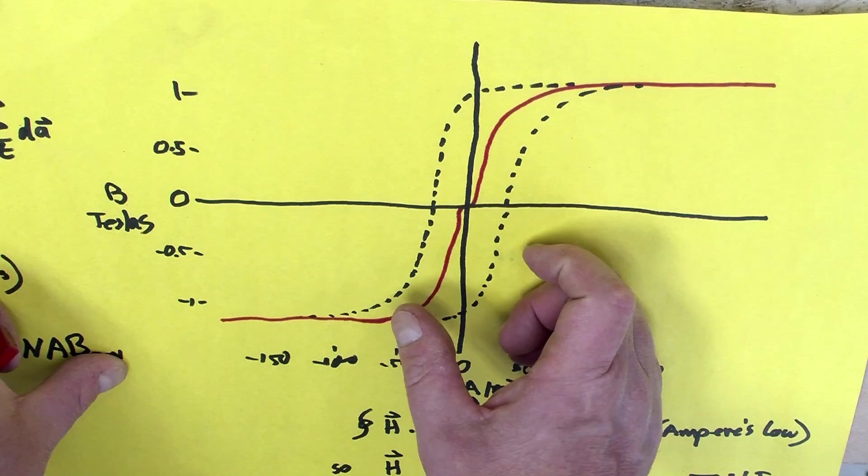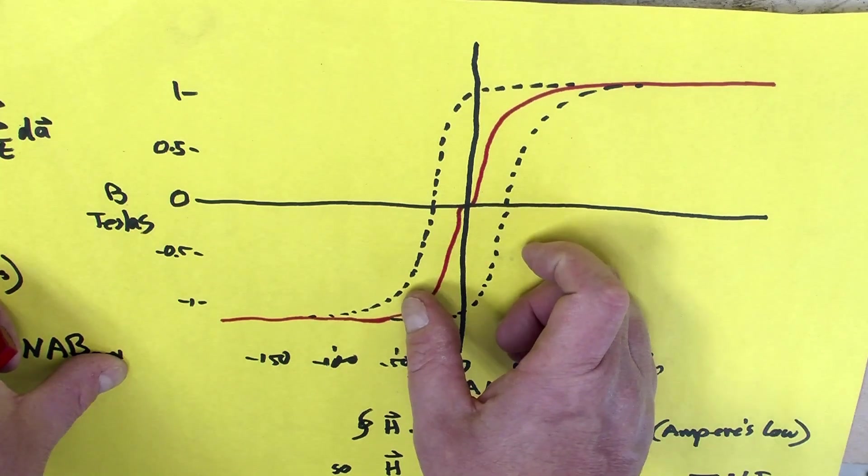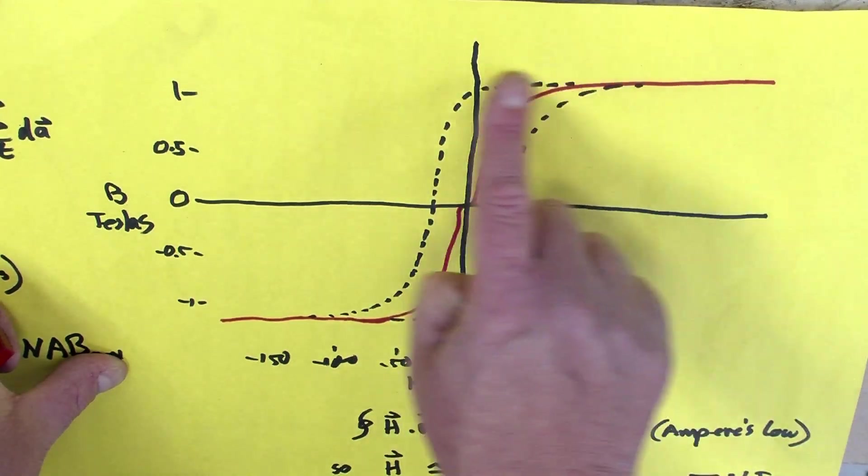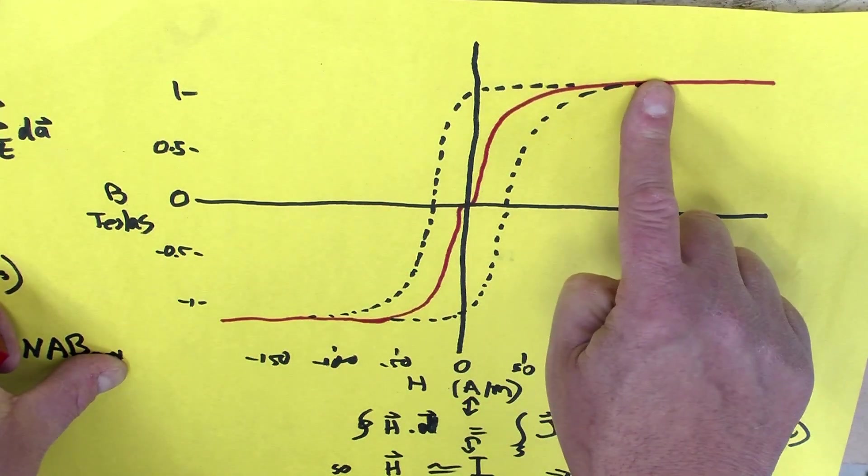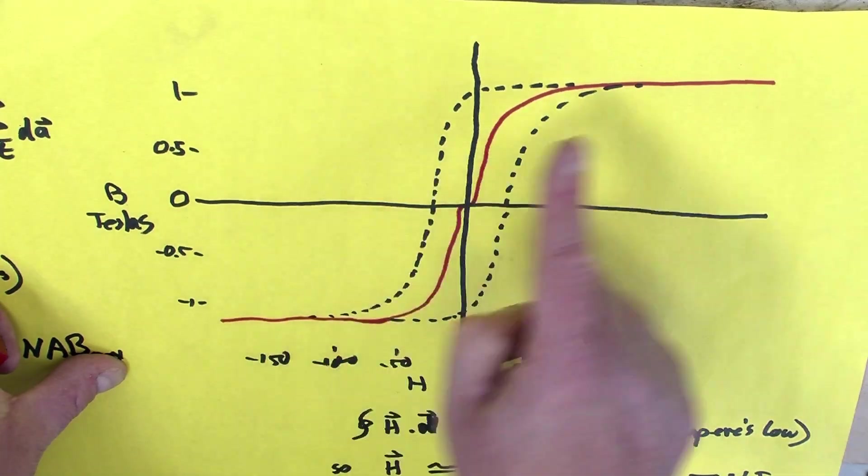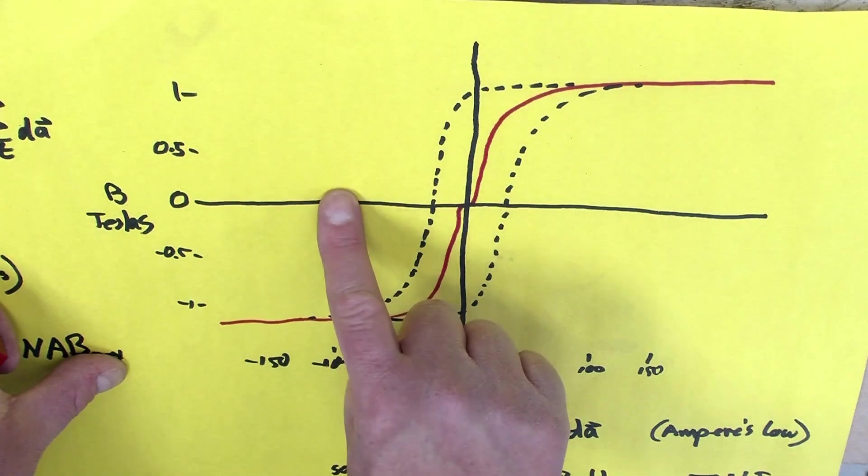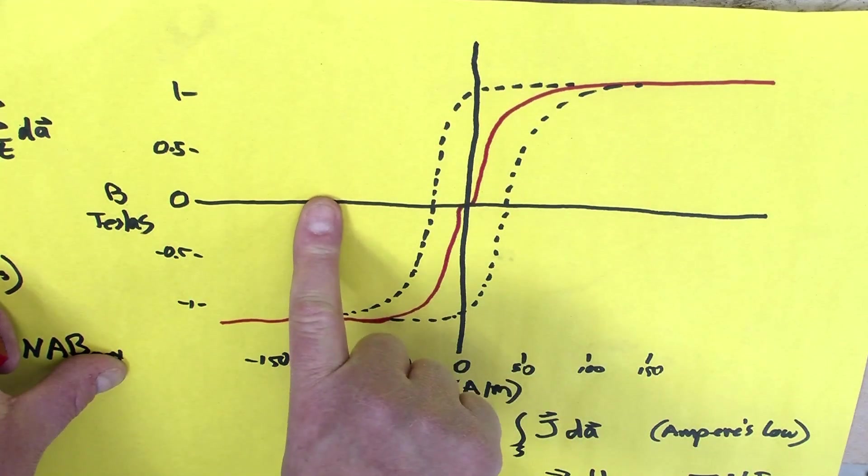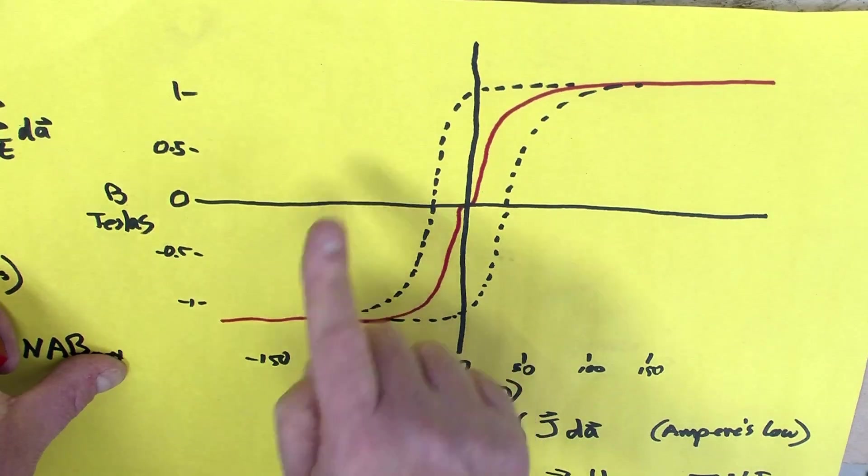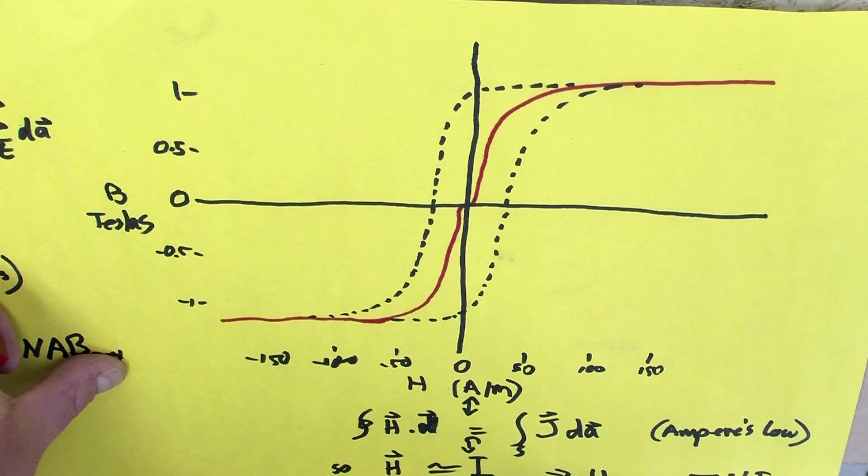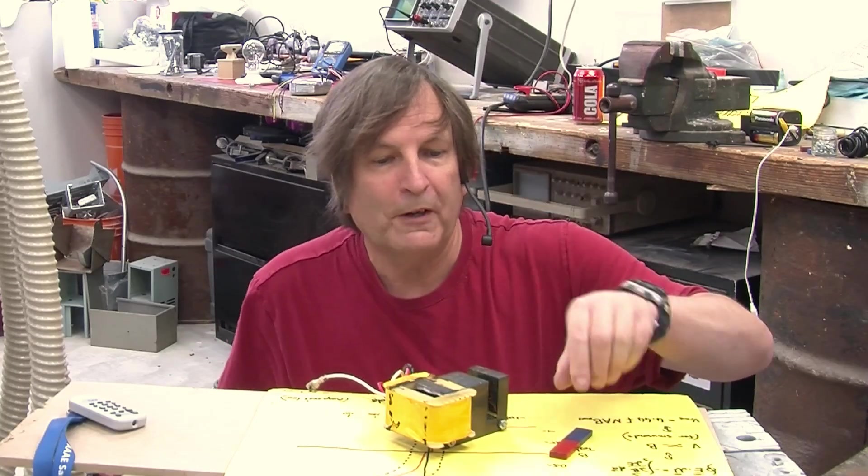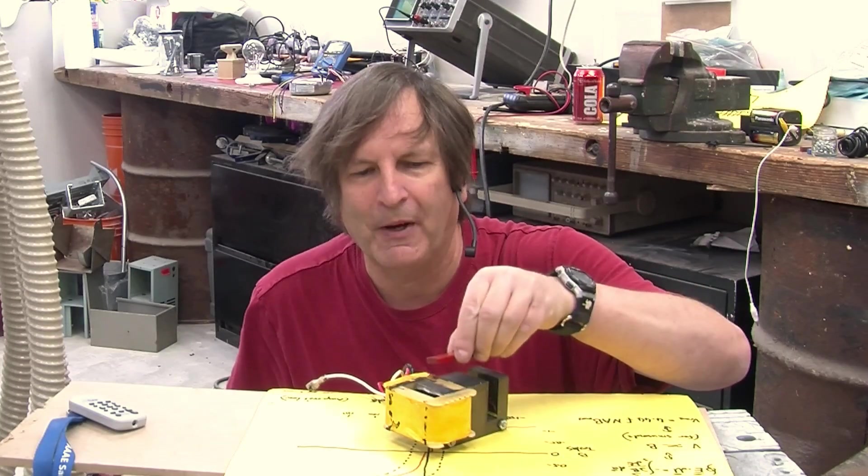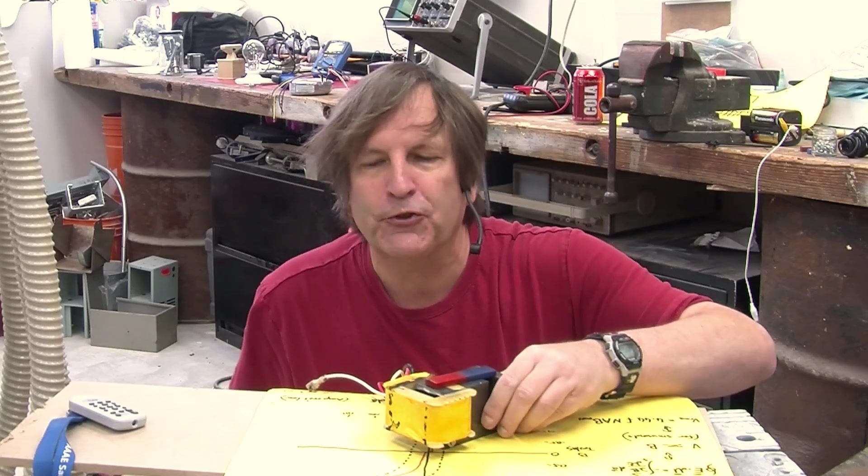So the bottom line is those really good neodymium magnets that we have today have a nice strong flux density up here of about a Tesla, but they also have a very wide curve in the BH curve so that it really takes a lot of force in the other direction to demagnetize them. And that's what makes them so great. So we've looked at using a very strong magnetic field to magnetize a magnet and also stroking it. But there is another way.